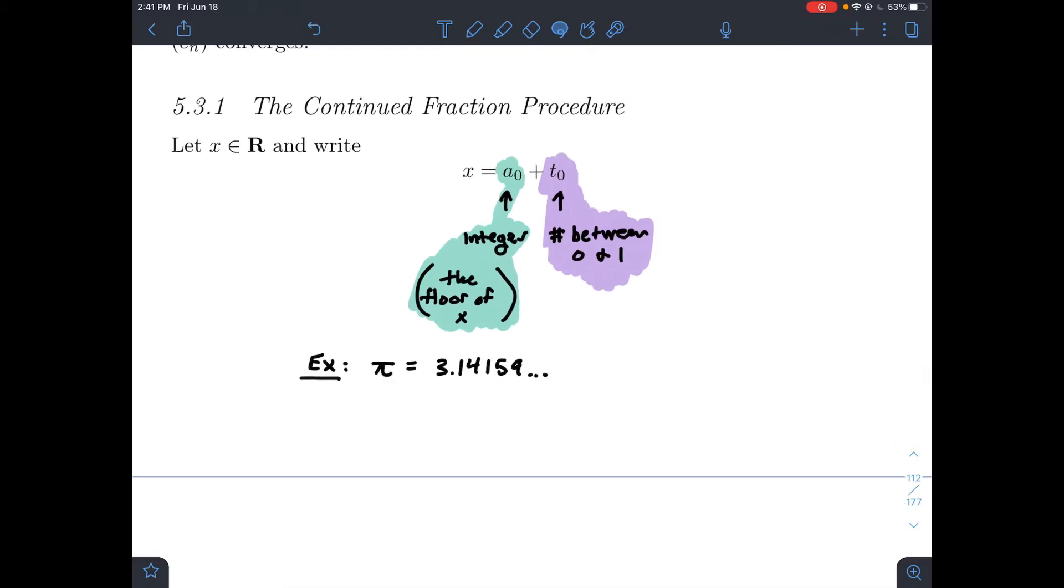So let's look at a little example. Take pi. Pi is a fantastic real number, 3.14, etc. So if I wanted to write it in this form a0 plus t0, what we're going to do is rewrite it as 3, that's the floor of pi, plus what's left, so the 0.14 and so on.